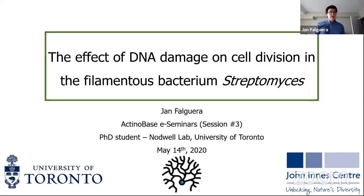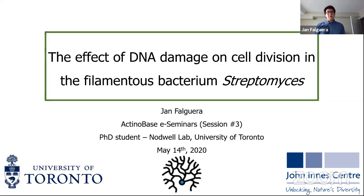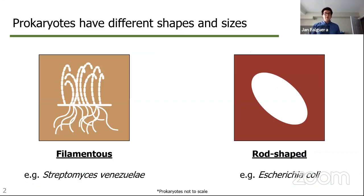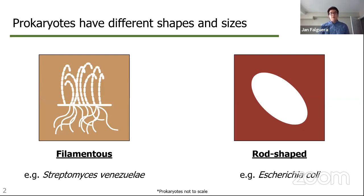My name is Jan from the Nodrell lab at the University of Toronto here in Canada. Today I'm going to talk to you about the work I've been doing with regards to understanding how DNA damage affects cell division in Streptomyces. The foundation of my project is based on the idea that prokaryotes come in different shapes and sizes. I'd like to exemplify this using two model bacteria: the filamentous Streptomyces, compared to more common bugs such as the rod-shaped E. coli.